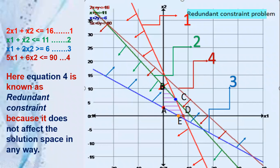But here, equation 4, the brown color line representing equation 4, is called a redundant constraint. Because you can see that even though you remove this brown line, it doesn't affect the solution space or the feasible region. It does not play any important role in the feasible region. That's why it is called a redundant constraint.